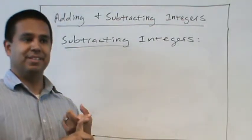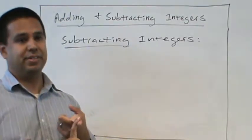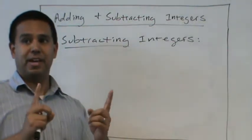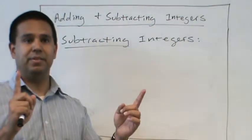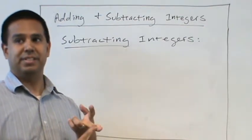We reviewed adding integers. When we add integers, if they're the same sign, we add and keep the sign. If they're different signs, one's positive, one's negative, you subtract and keep the sign of the bigger number, the larger number.